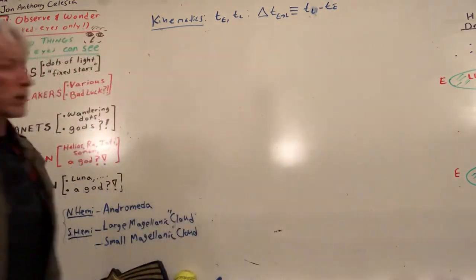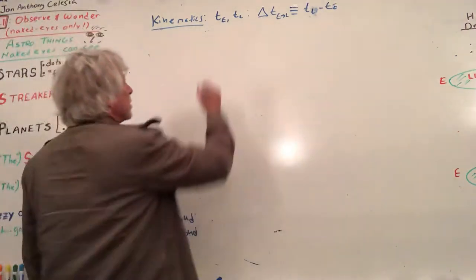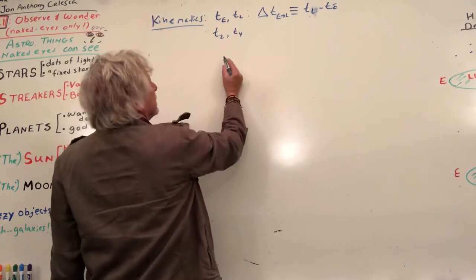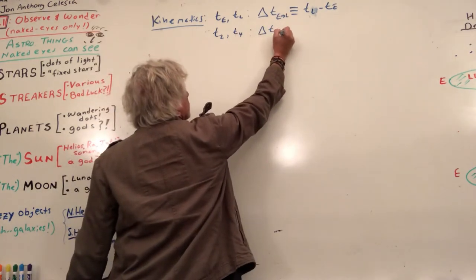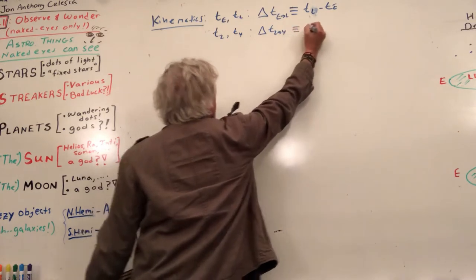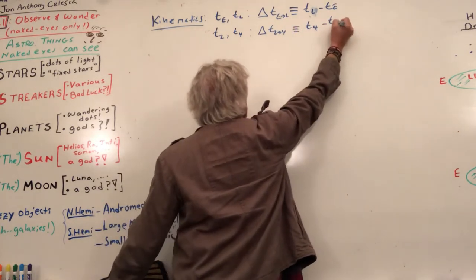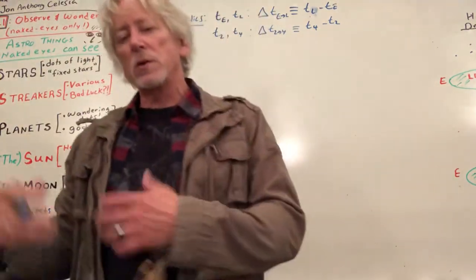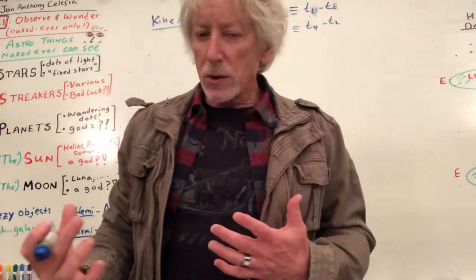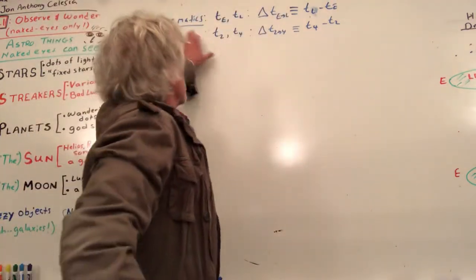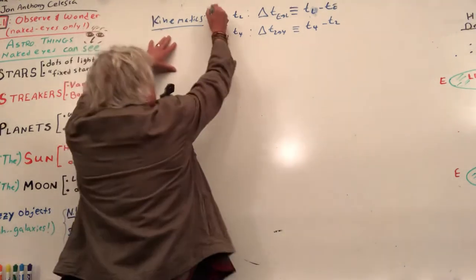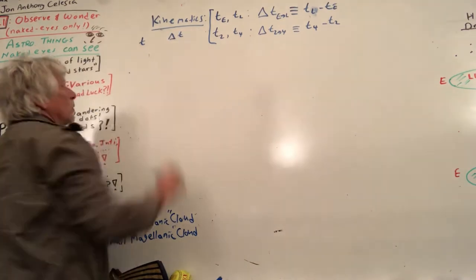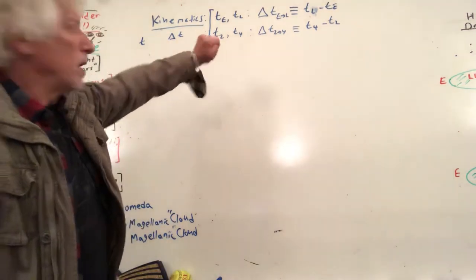If you want to get specific, you could say time-2 and time-4, and the change in time from 2 to 4 is by definition time-4 minus time-2. So we're going to have a process, pause it at time 1, time 2, time 3, time 4, and relate those. For kinematics we deal with time t and delta t — specific ones with good notation.